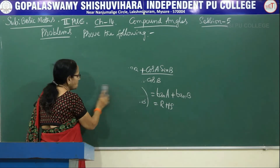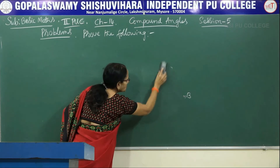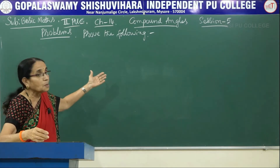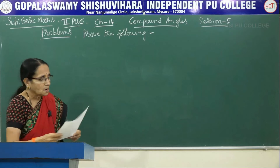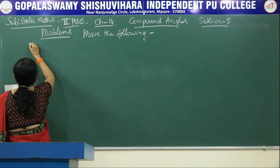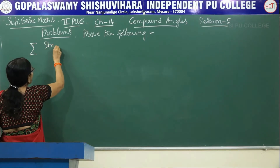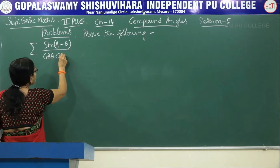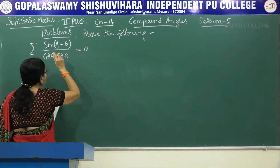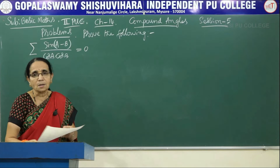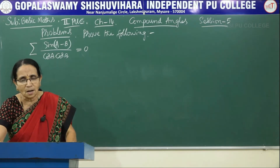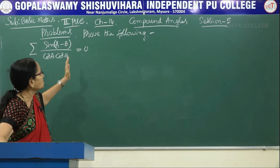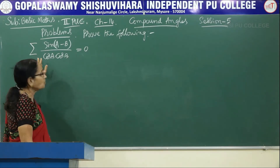Now let me consider another problem — it is sort of an extension of this one. Prove that Σ sin(A-B) divided by cosA·cosB equals 0. When the right hand side is 0, whatever terms we get on the left hand side must all cancel.